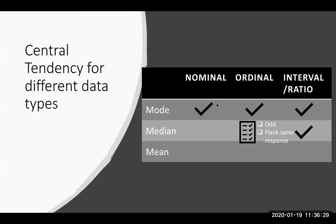Now let's think about having a median for nominal data, like religion. The first step in calculating the median is putting values in order. But is there an order to religion? Is there one that has to go first or last? The answer is no — religion could be in alphabetical order, historical order, or popularity order. There's no defined order, so you cannot calculate the median for nominal data.